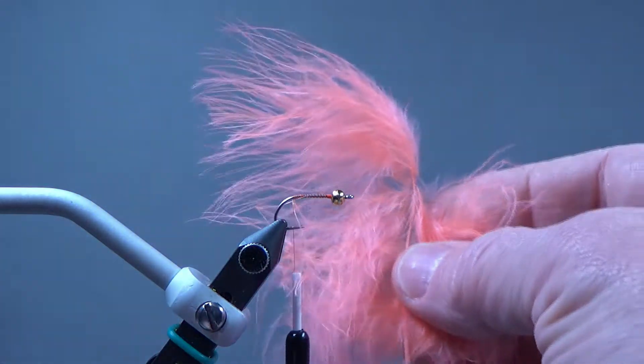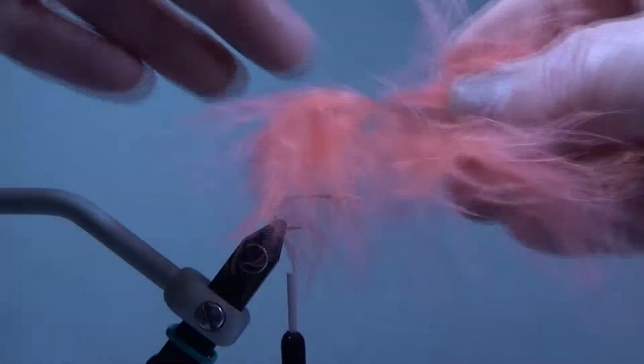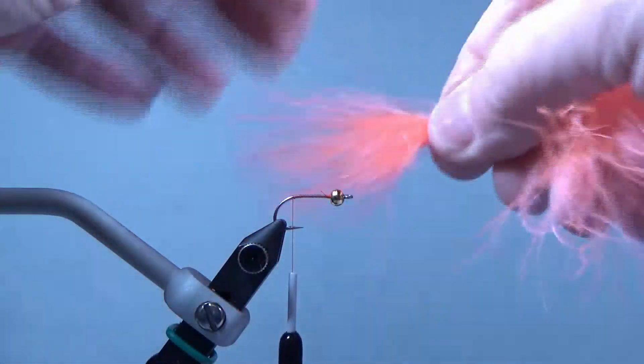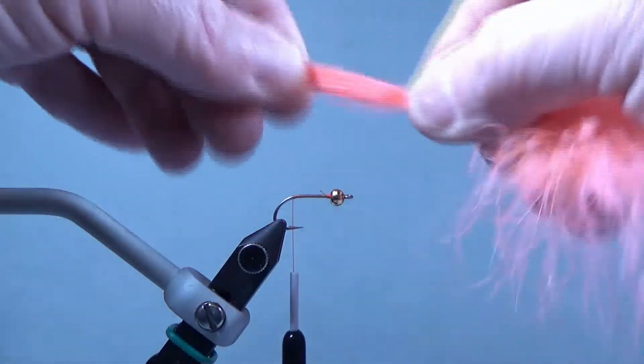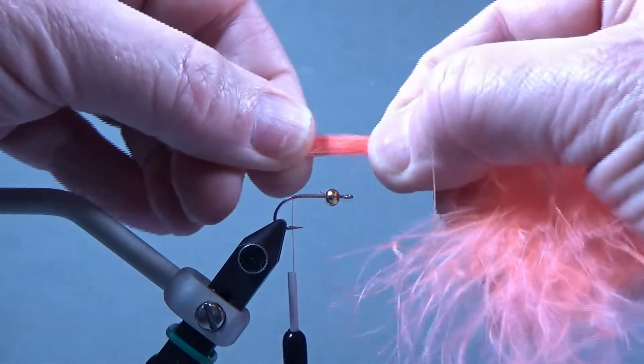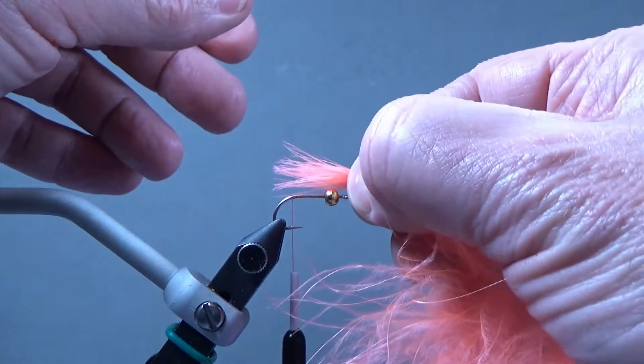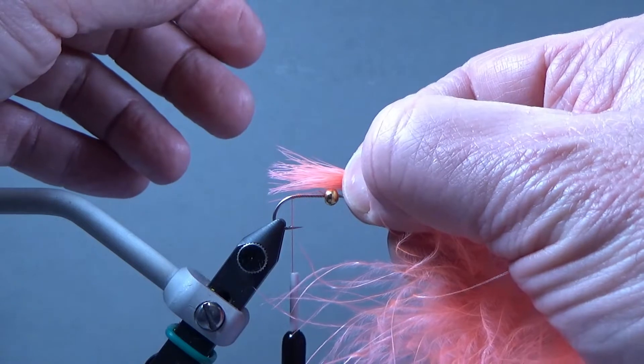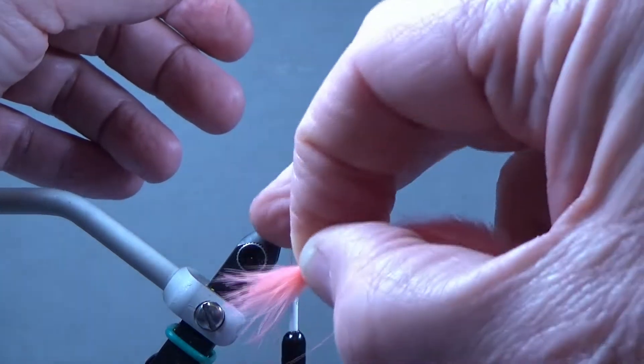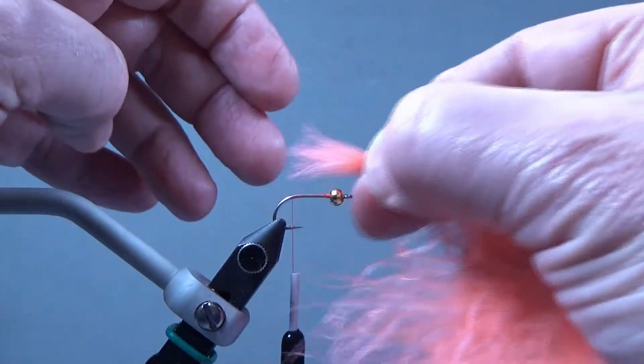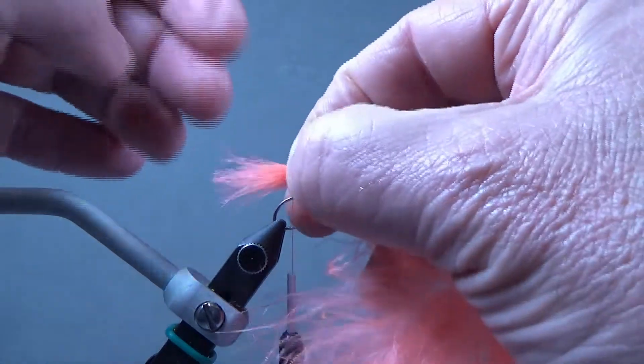Then I take a shell pink marabou feather and I'm going to use the tip as the tail. So I want this tail to be probably about the length of the shank, maybe just no more than that. So if it extends too far it'll end up wrapping around the hook when you're casting. So keep it just about there to the length of the shank.